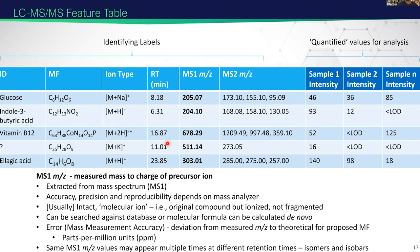We have the mass-to-charge ratio for the precursor ion — the MS1 information. The accuracy and precision depends on what mass analyzer was used: an Orbitrap or FT-ICR gives really good accuracy and precision, while a linear ion trap gives much less. We can use the measured m/z to calculate the molecular formula by combinatorial searching. The error is reported in parts per million (PPM) — under 1 PPM is excellent from FT-ICR, under 5 PPM from an Orbitrap, and under 20 PPM from a TOF.